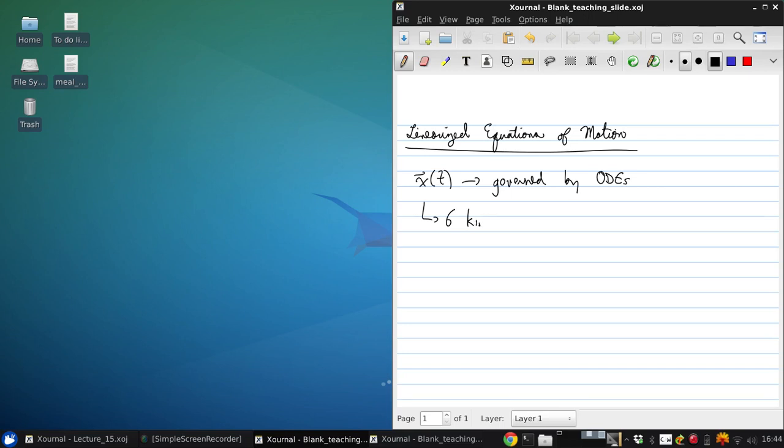So we have 12 ordinary differential equations which govern our system. Six kinematic equations, X_E, Y_E, Z_E, and the Euler angles, and six dynamic equations, U, V, W, P, Q, R, and then L, M, and N.